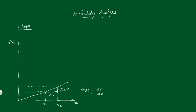Slope means how much v is varying with respect to x. Here delta v equals v2 minus v1, and delta x equals x2 minus x1 — that is, final position minus initial position. Since v2 is greater than v1 and x2 is greater than x1, this quantity is positive. So this slope is positive.